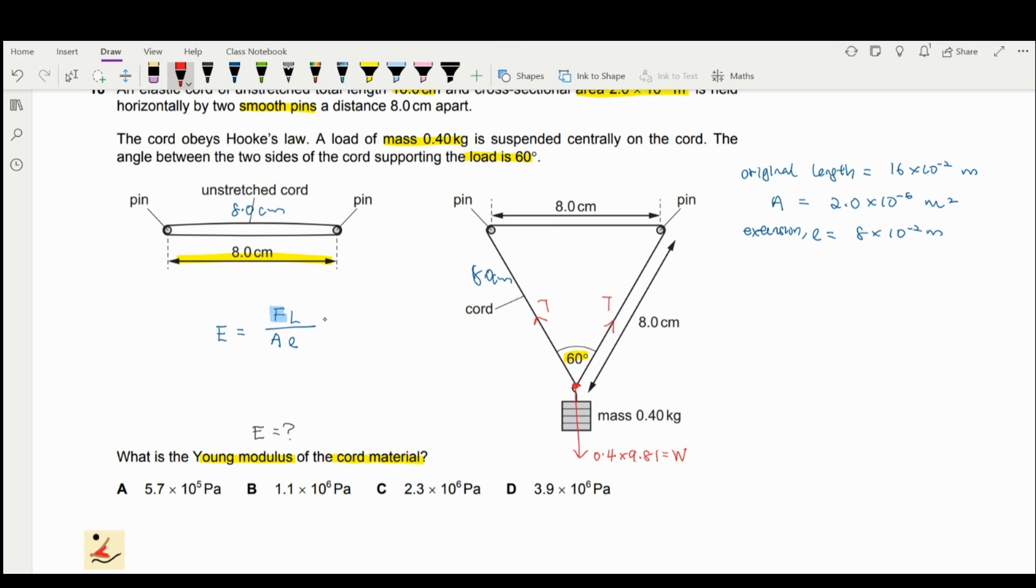So both tensions balance the weight. So if you draw a vertical line here, you should have 30 degrees here. You have 30 degrees. So you have to resolve your tension to vertical.